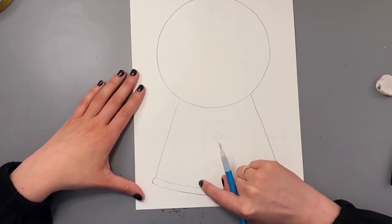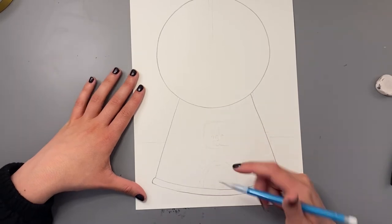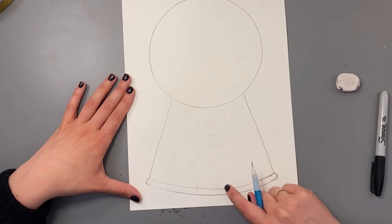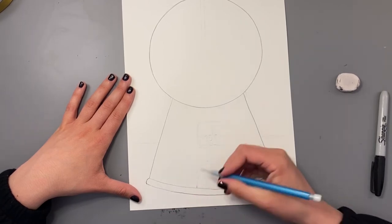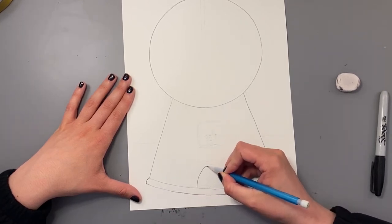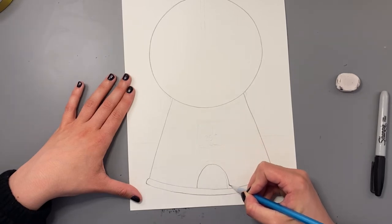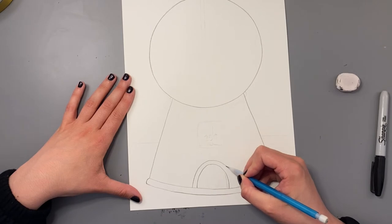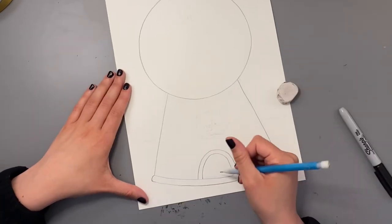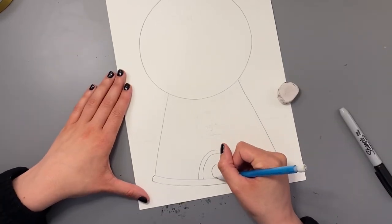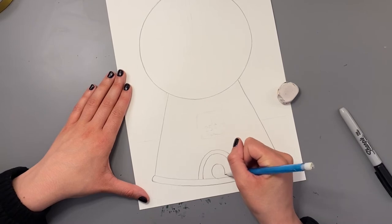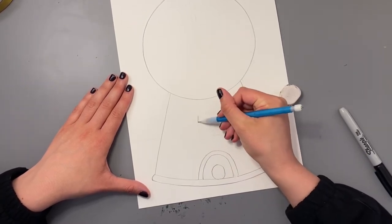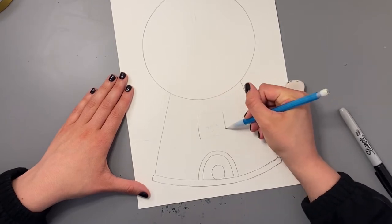Now we can draw some details on the base of our gumball machine. You can draw a little hole at the bottom for the gumball to come out of. So to do that, we're going to draw a rainbow line or almost like a half circle at the bottom here. So here's one. And then we're going to draw a second one above it. Then you can draw a circle for a gumball that is coming out of the machine.